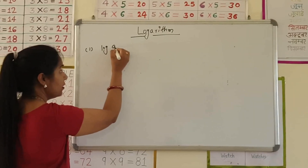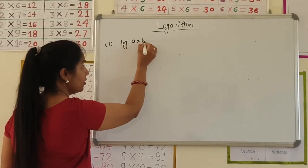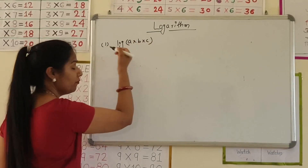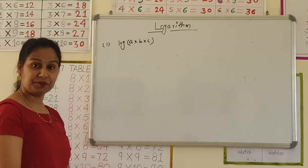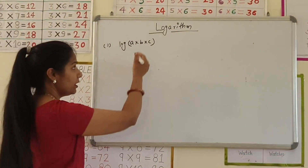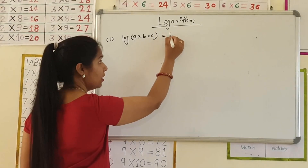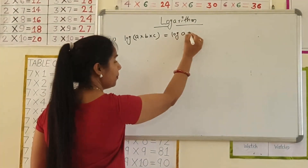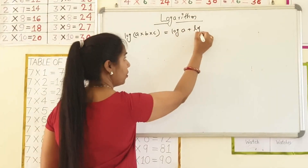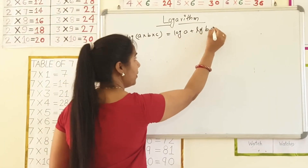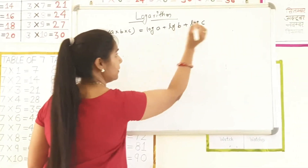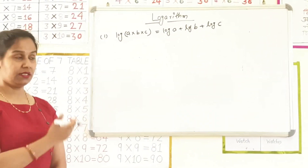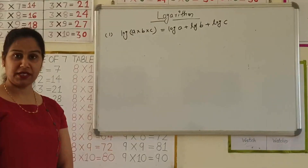If there are numbers which are in multiplication form with log, then you can also write this as log A plus log B plus log C. This is the first property.